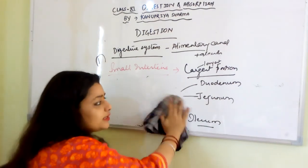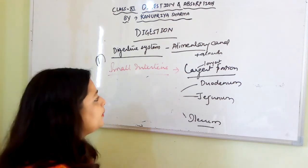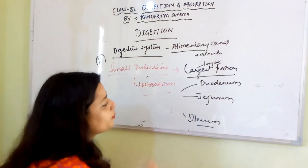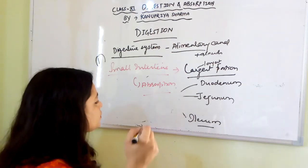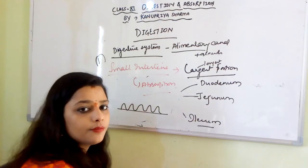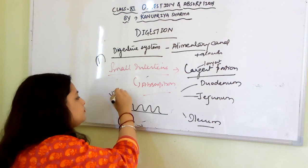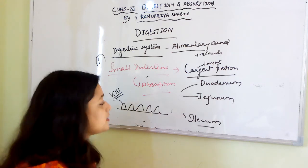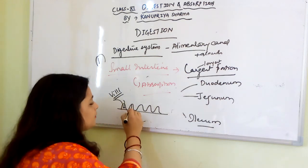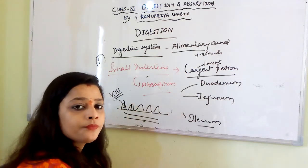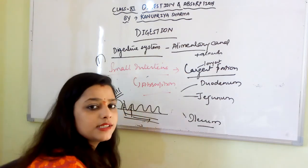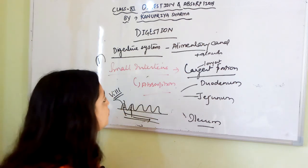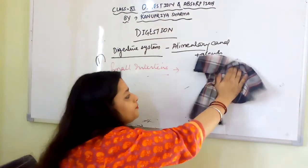The small intestine is the main portion where absorption takes place. The alimentary canal has finger-like projections called villi which absorb the finely digested nutrients and transfer them to the underlying capillaries. From there, nutrients move to the cells, and when they are utilized in the cells, that process is known as assimilation.